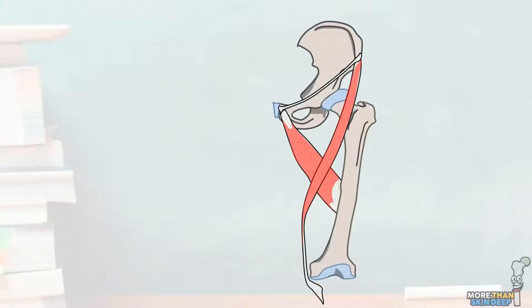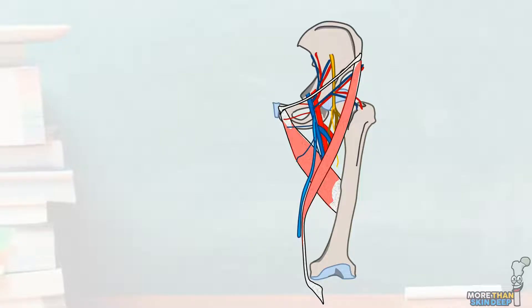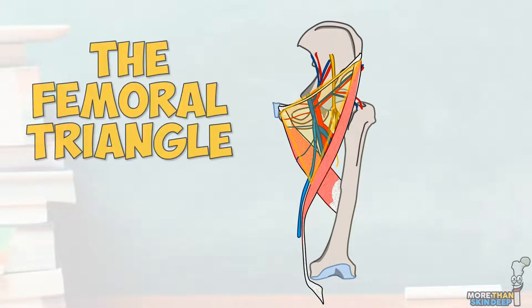The femoral triangle is an area located on the upper anteromedial thigh and is a passage for a number of key structures that run through it on their way into and out of the leg. It's also a frequently questioned area during your anatomy exams and beyond. Today we're going to cover the borders and contents of the femoral triangle. I'm Dr. Connor Boyleham and welcome to More Than Skin Deep.